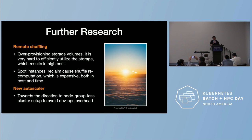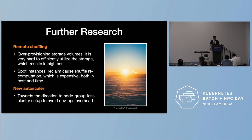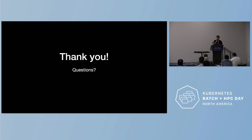For future work, we are looking at several directions. One is remote shuffling — Spark shuffles data on local disk, which creates problems on cloud, so remote shuffling moves shuffle data to remote storage, making Spark more cloud-native. We are also looking at new autoscalers to replace the cluster autoscaler, such as Karpenter and Ocean from Spot, which move towards a node-group-less cluster setup and save a lot of development effort. And with that, that's all for my presentation — questions?